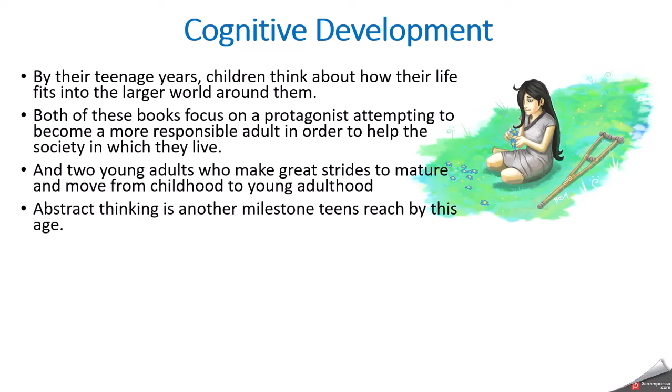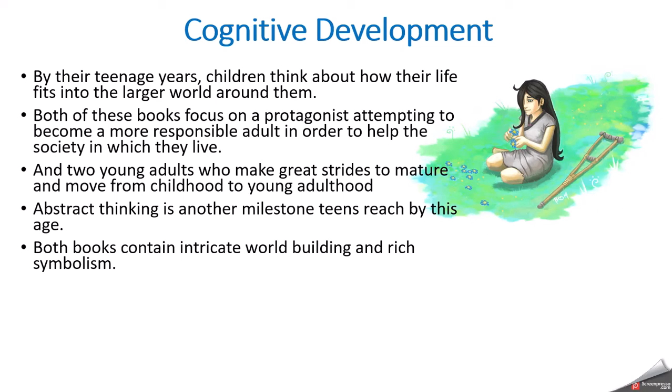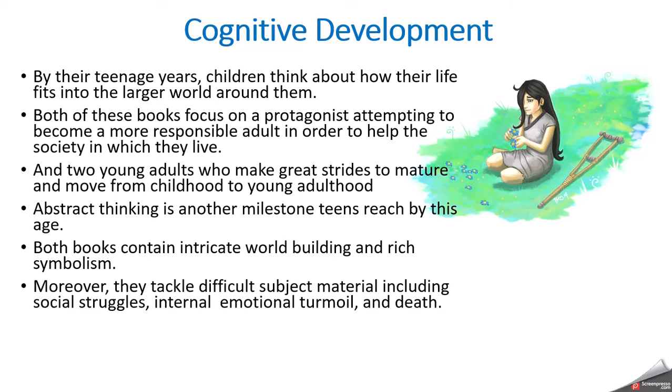Abstract thinking is another milestone reached. Both books have a lot of world building — a focus on the setting, the rules of the society, both the social and physical setting. There's a lot of symbolism in both books. They tackle difficult subject material: social struggles, internal emotional toil, and death. Both books are quite frank about death, from the character's perspective, so the character is seeing what's happening.